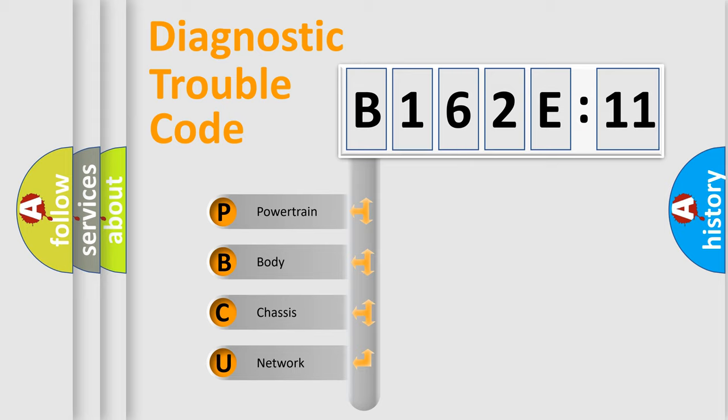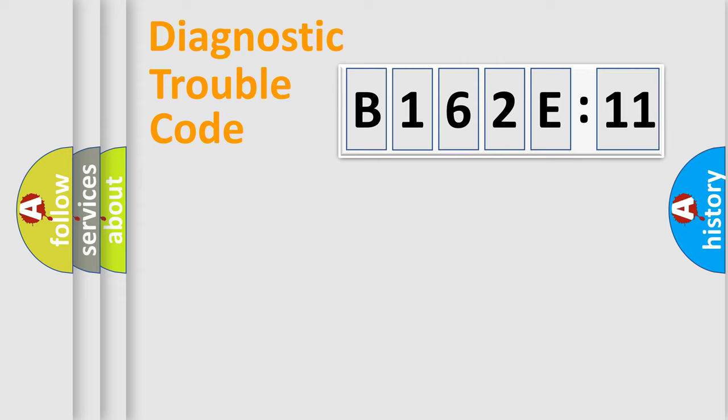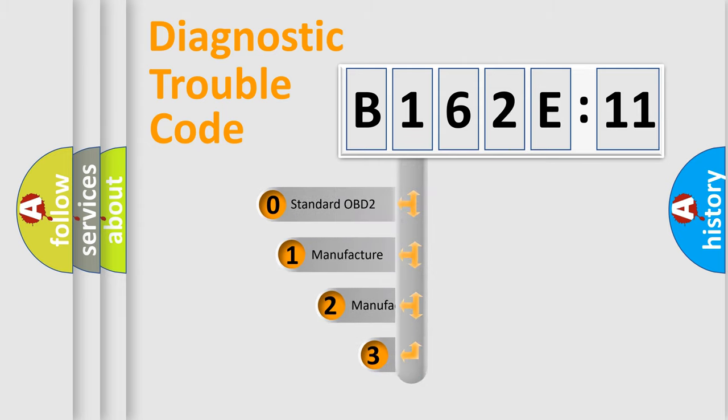We divide the electric system of automobile into the four basic units: Powertrain, body, chassis, network. This distribution is defined in the first character code.